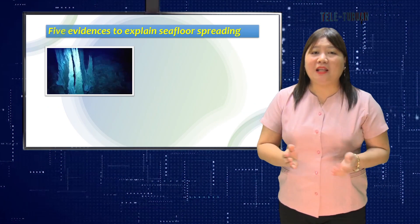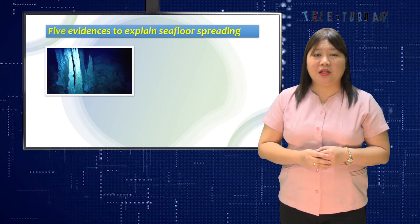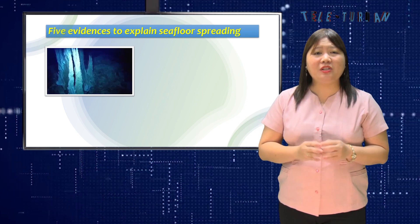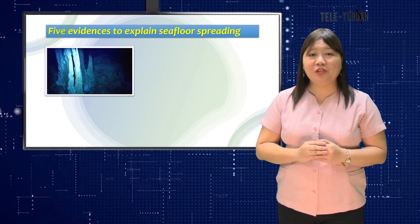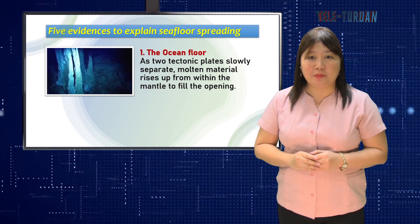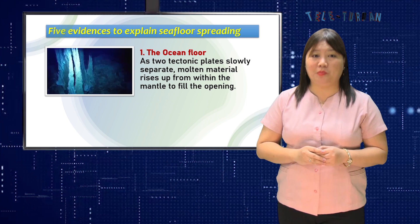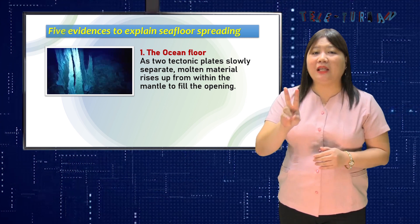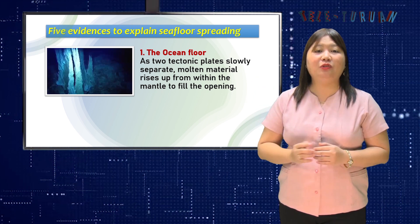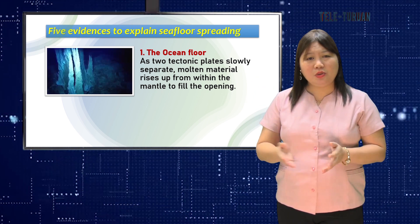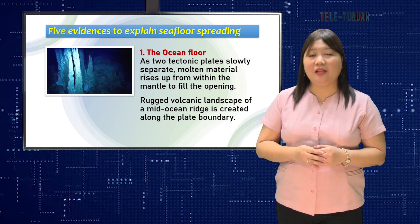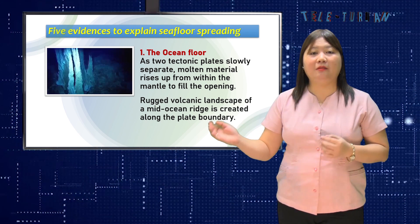We can explain seafloor spreading by considering the usual process at work at divergent plate boundaries. First, the ocean floor can explain the occurrence of seafloor spreading. As two tectonic plates slowly separate, molten material rises up from within the mantle to fill the opening. In this way, the rugged volcanic landscape of a mid-ocean ridge is created along the plate boundary.